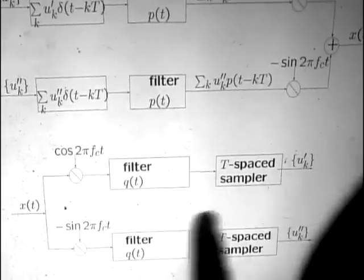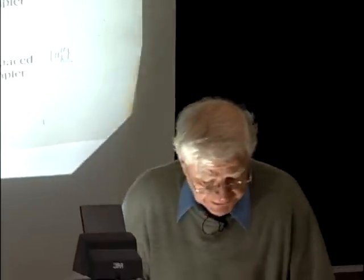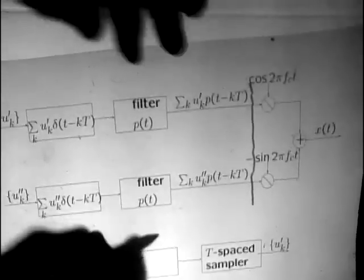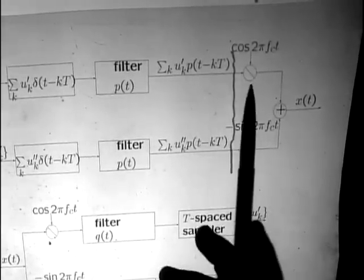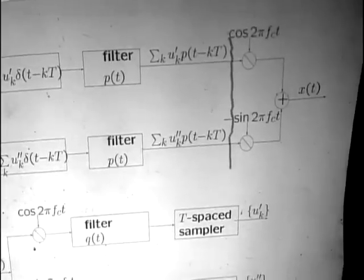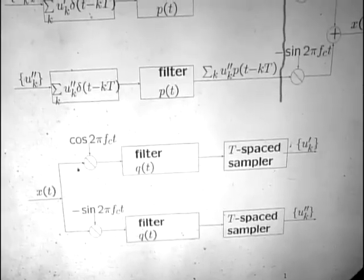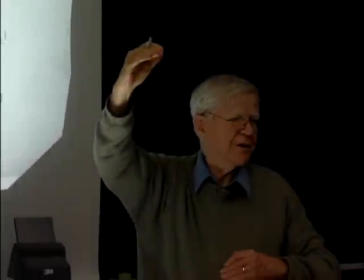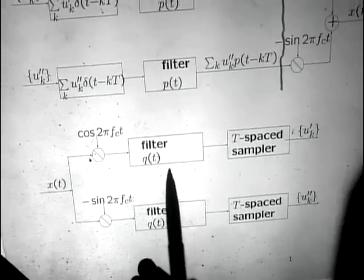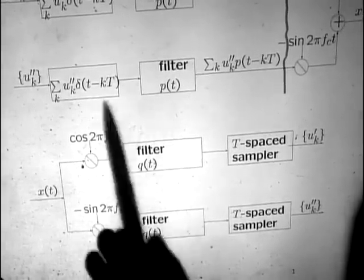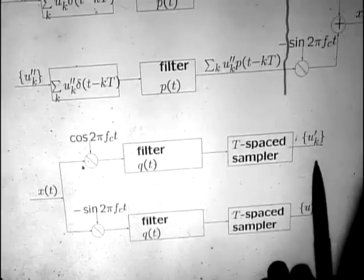We filter by q(t), the same filter, and we wind up going through the T-spaced sampler. The output is u sub k prime. If you look at the system broken at this point, this is simply a PAM waveform. When we take this PAM waveform, the only thing we're doing is multiplying it by a cosine, then multiplying it by a cosine again.